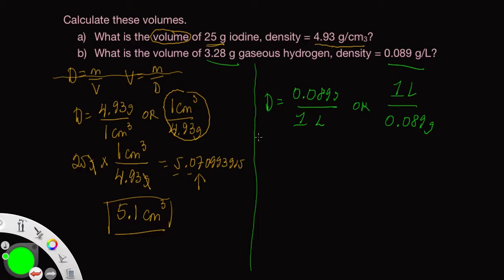Now we have 3.28 grams, which is what we're starting with. And what we'll want to do is figure out a way to get that grams to cancel. We can see here that we use this fraction, this conversion factor. We have 1 liter up on top, divided by 0.089 grams. The grams cancels.